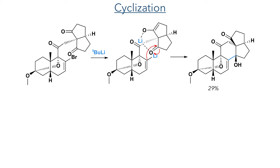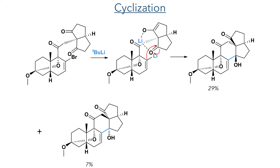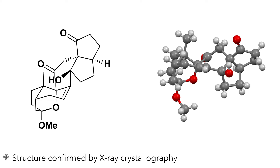With this in hand, the authors could then move forward to the cyclization step, which de-symmetrizes the symmetric diketone. Reaction with an excess of tert-BuLi first forms an enolate and then undergoes halide exchange to produce the organolithium species, which undergoes an intramolecular addition to the carbonyl and forms the target alcohol in a 29% yield, together with a 7% yield of its enantiomer and the de-brominated product in a 31% yield. The authors were also able to confirm the stereochemistry of this product by X-ray crystallography.